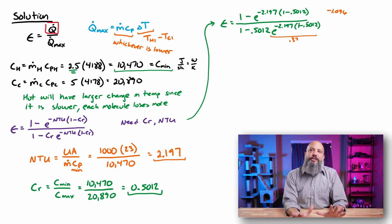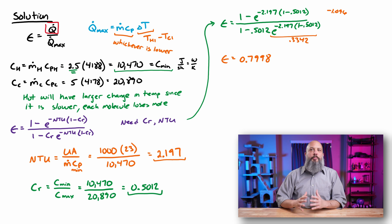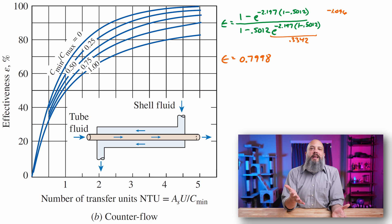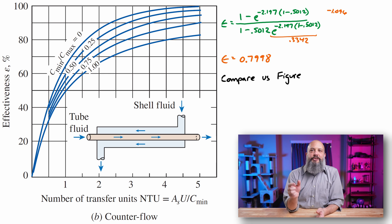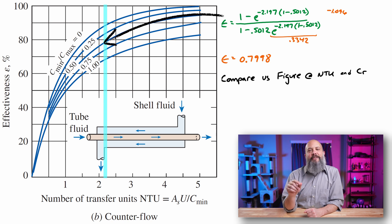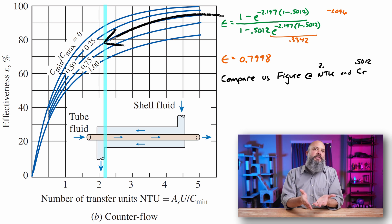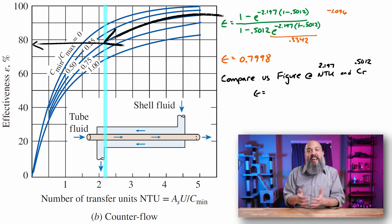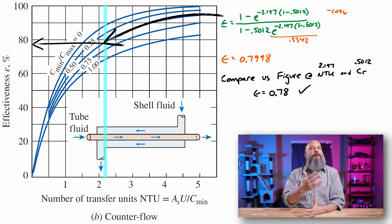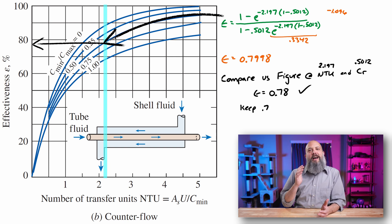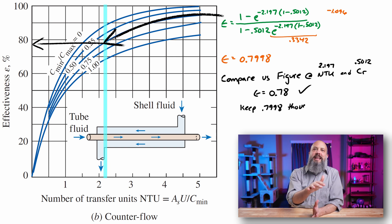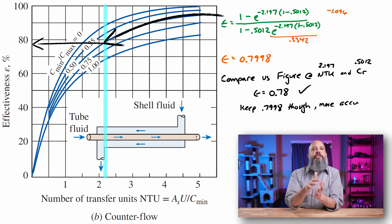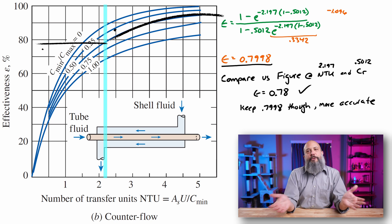I can verify this using a textbook figure for a counterflow double-pipe heat exchanger. With NTU = 2.2 and CR = 0.5, the figure shows effectiveness of about 0.78 — very close to the 0.7998 from the equation, so I'll put a check mark there. I'll still use 0.7998 going forward, but checking the figure is a good way to catch calculator errors.